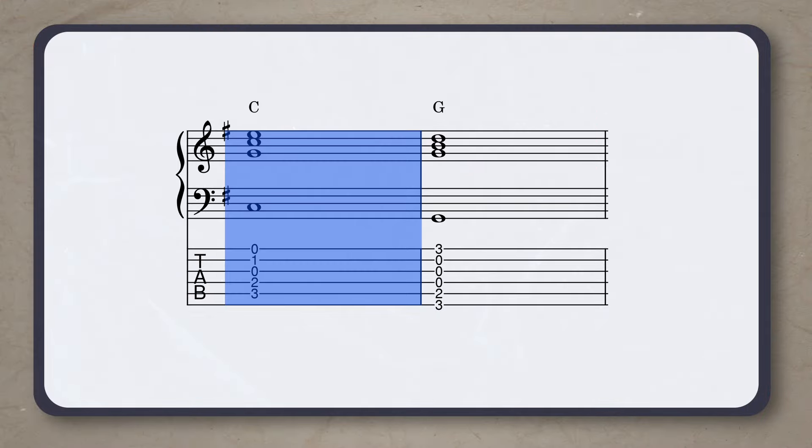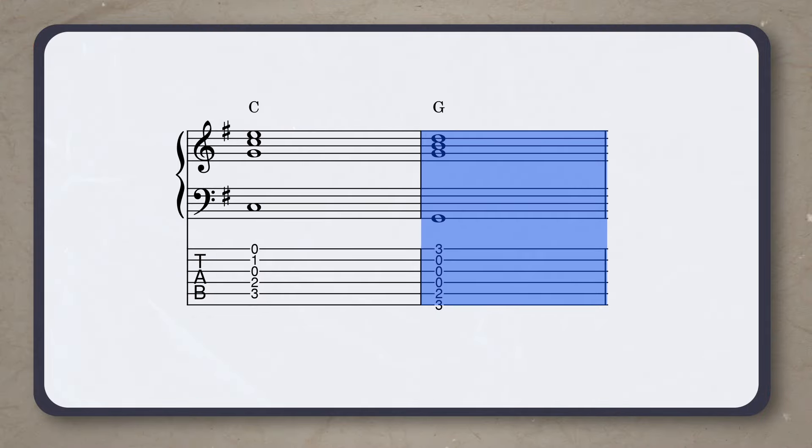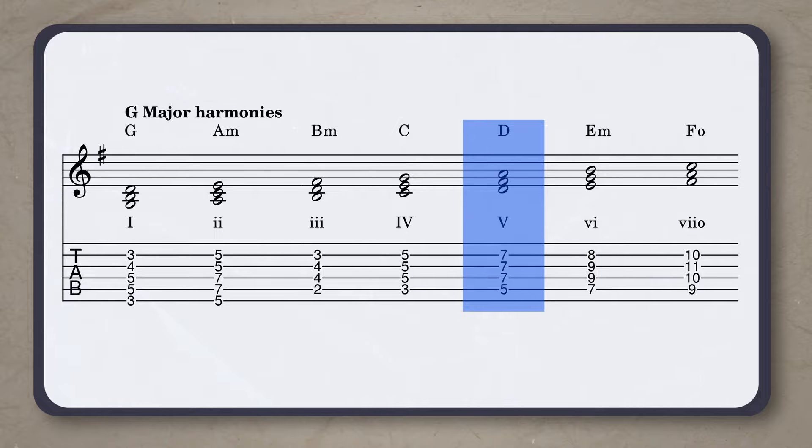The verse is in the key of G major. Except for the E minor 6 chord, all chords fit the harmonies of G major. John Lennon circles around the dominant harmony, which is the D and D7. Eventually, at the end of the verse, we go back to the G major chord via a plagal cadence from the C major chord. This is a softer and weaker cadence than going from D to G.